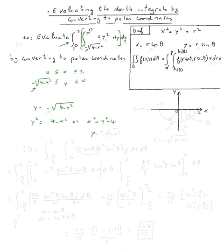However, if you solve for y, you get minus or plus square root of 4 minus x squared. So we need the negative one, meaning the bottom half circle.